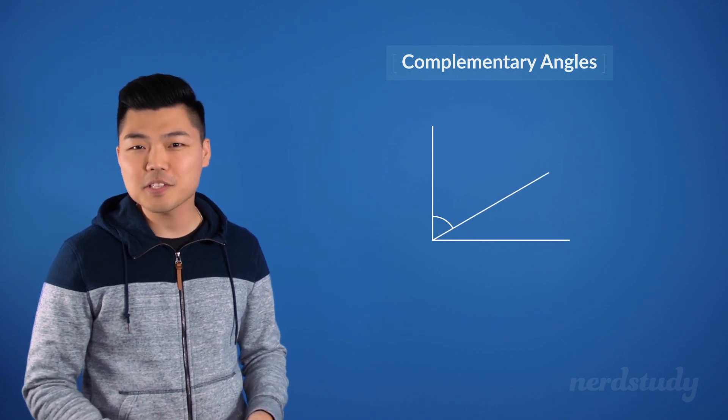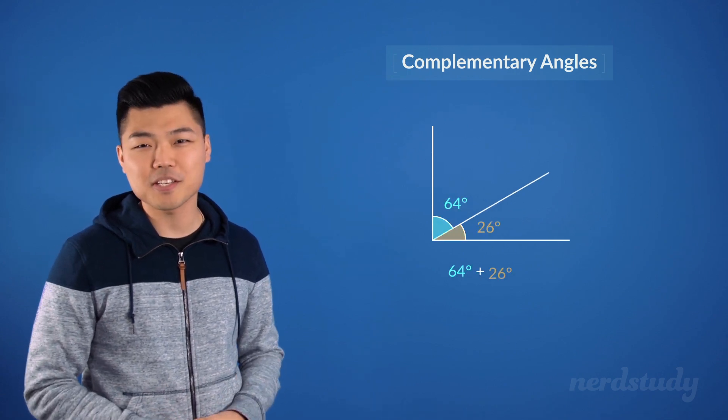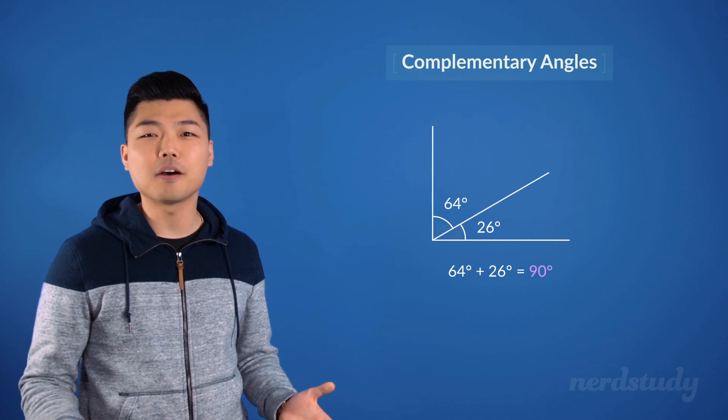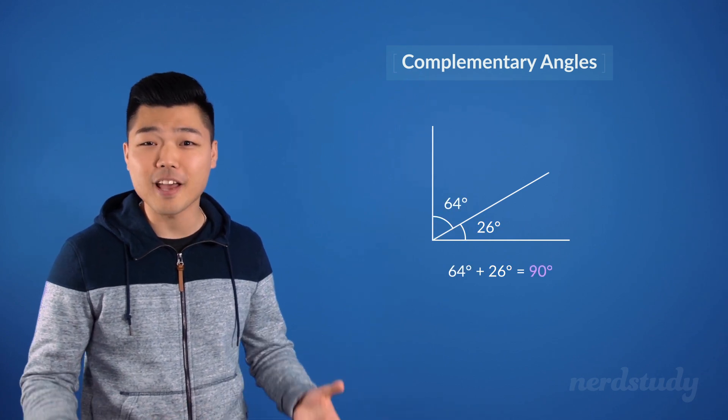So, in this example, we have 64 degrees and 26 degrees, which means they add up to 90 degrees, making them complementary angles.